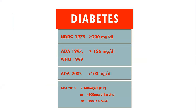Down the line, in 2003, this figure was further reduced to 100 mg per deciliter as per the American Diabetes Association. And in 2010, per the ADA guidelines, the fasting blood sugar threshold was set at 100 mg per deciliter and postprandial at 140 mg per deciliter. So from time to time, the figure of 200 mg per deciliter has been reduced and is now 100 mg per deciliter for fasting.